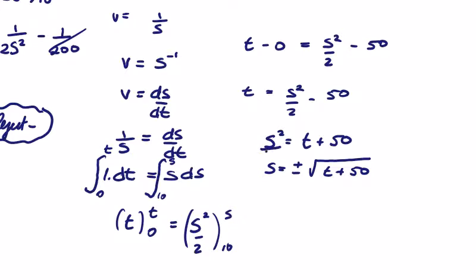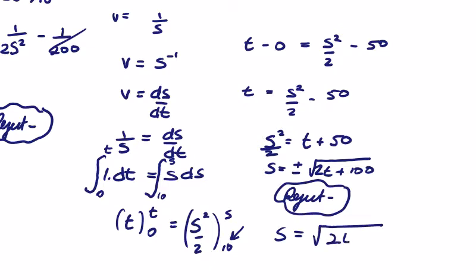If I do it correctly it will be s squared over 2, so 2t plus 100. Just be careful. And s is equal to 10 when t is 0, so we have to reject the negative here and say that s is equal to the square root of 2t plus 100.